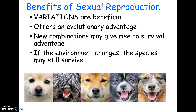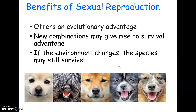For example, organisms with immunity to a disease, thicker fur, longer necks, darker feathers, or the ability to fly longer may have a survival advantage. Some organisms from the species will still survive rather than all being wiped out. If everybody is identical, then something that kills one will kill all of them — that's the core benefit of sexual reproduction.